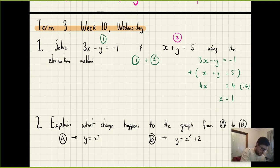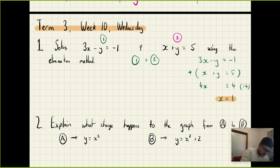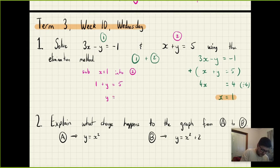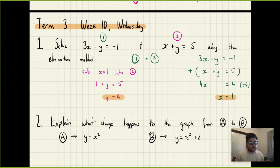I'll highlight that because I've got half the answer. To get the other half, I'm going to substitute x equals one into equation two. So x plus y equals five becomes one plus y equals five, which means y equals four because one plus four is five. So I've got both answers: x equals one and y equals four.